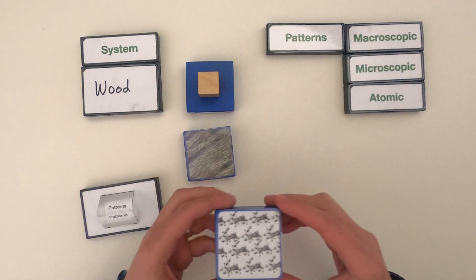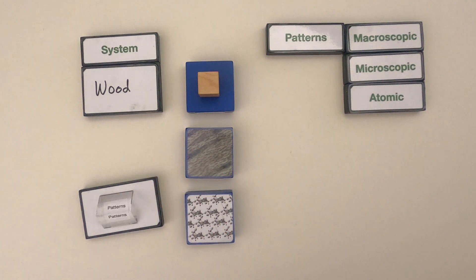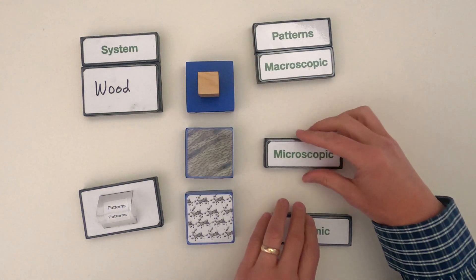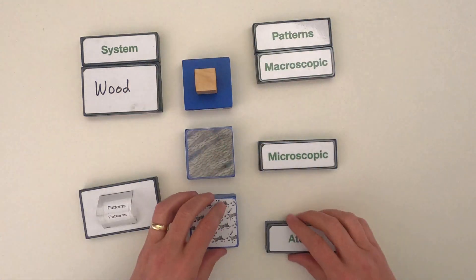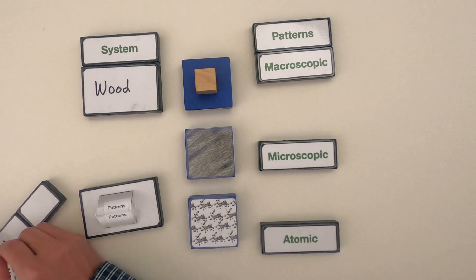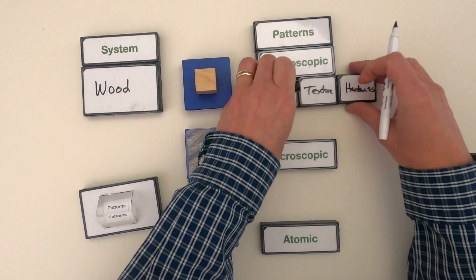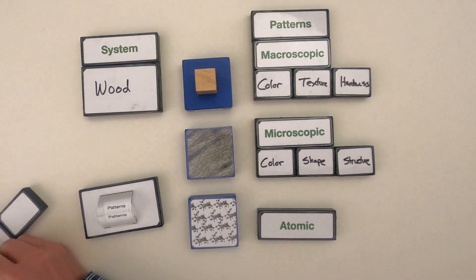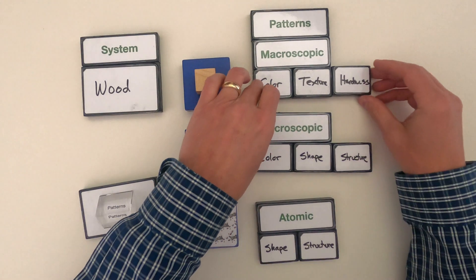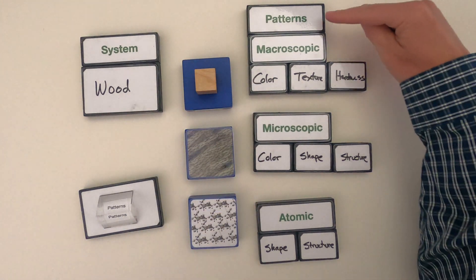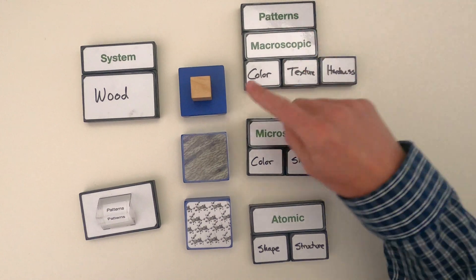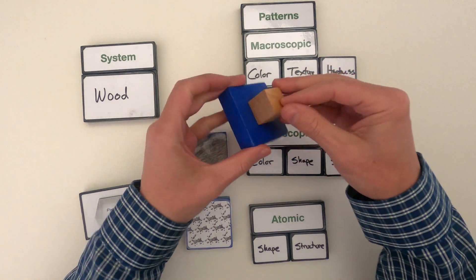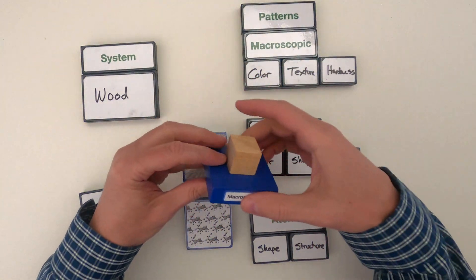This is what wood looks like if I look at it under the microscope, and this is what it would look like if we're looking at all the atoms inside. So what we're going to do is recognize what are the patterns at each of these different scales. I'll do this first one and then I'll have you do one on your own. Some patterns that we would see at each of the different scales.